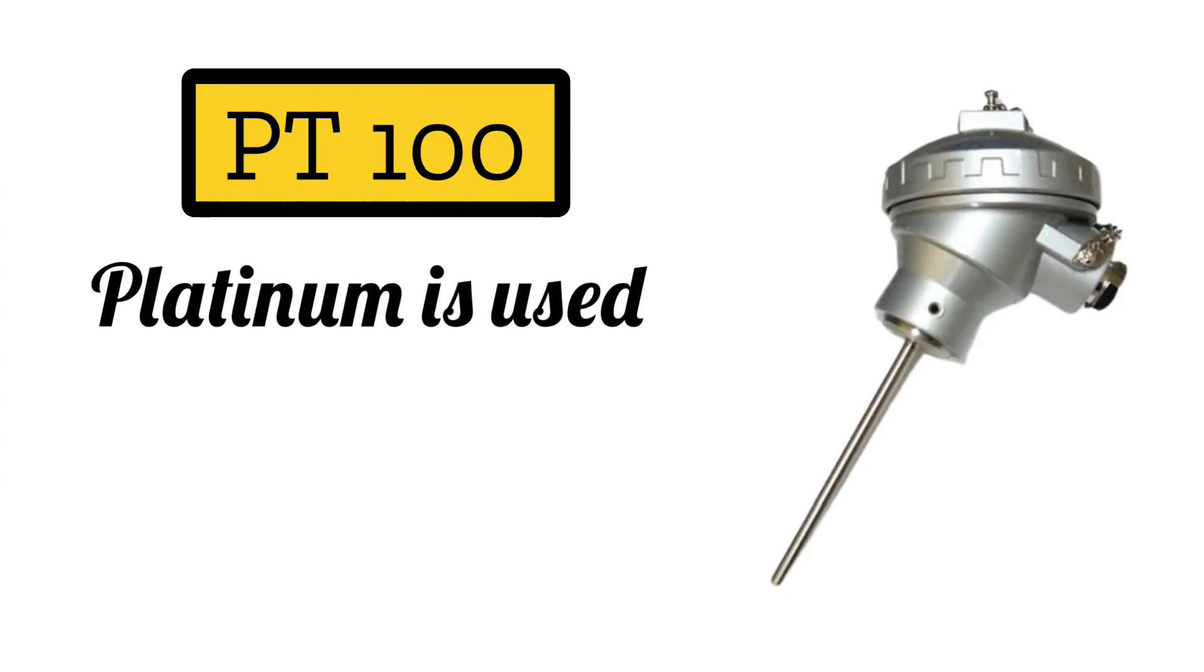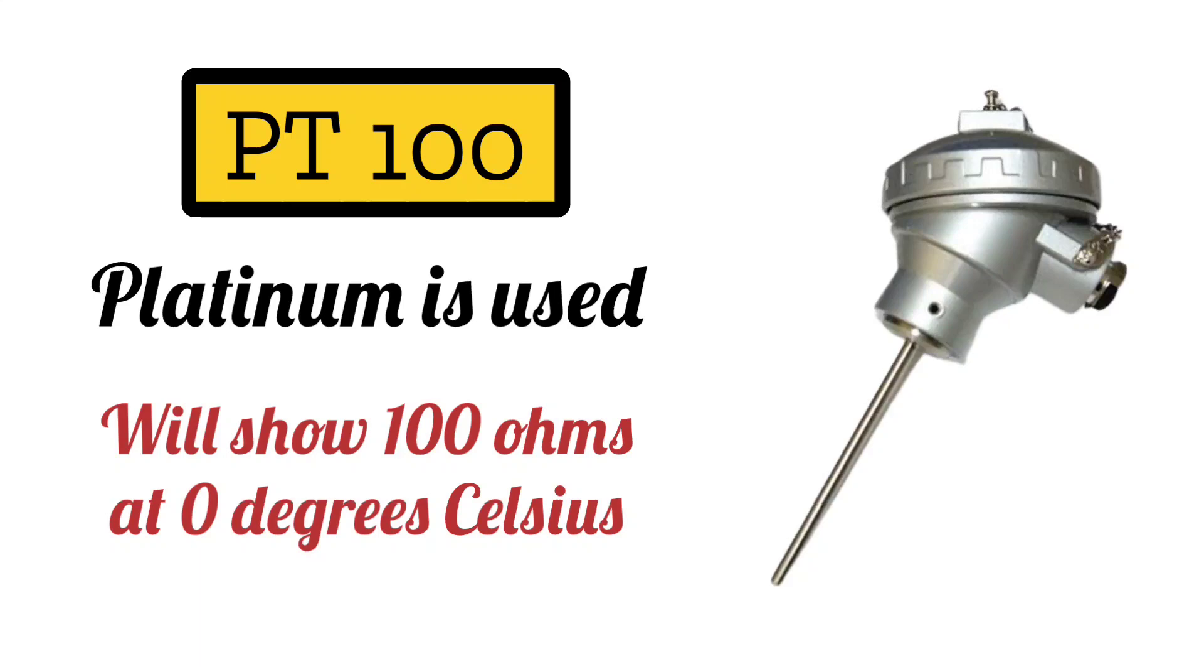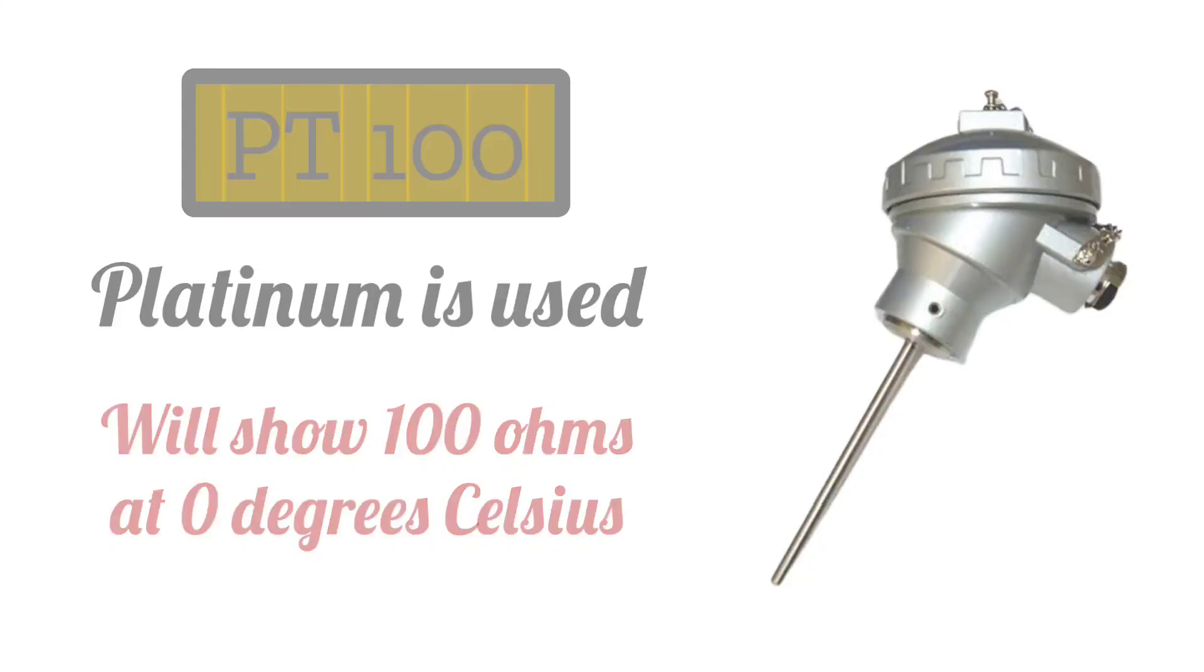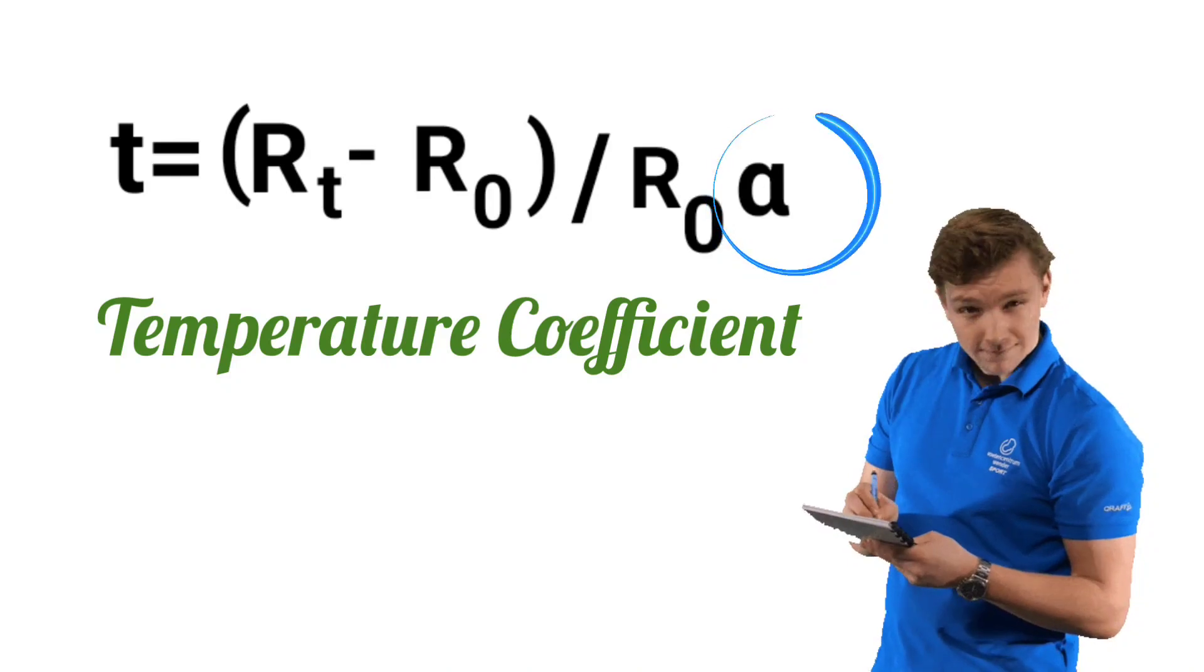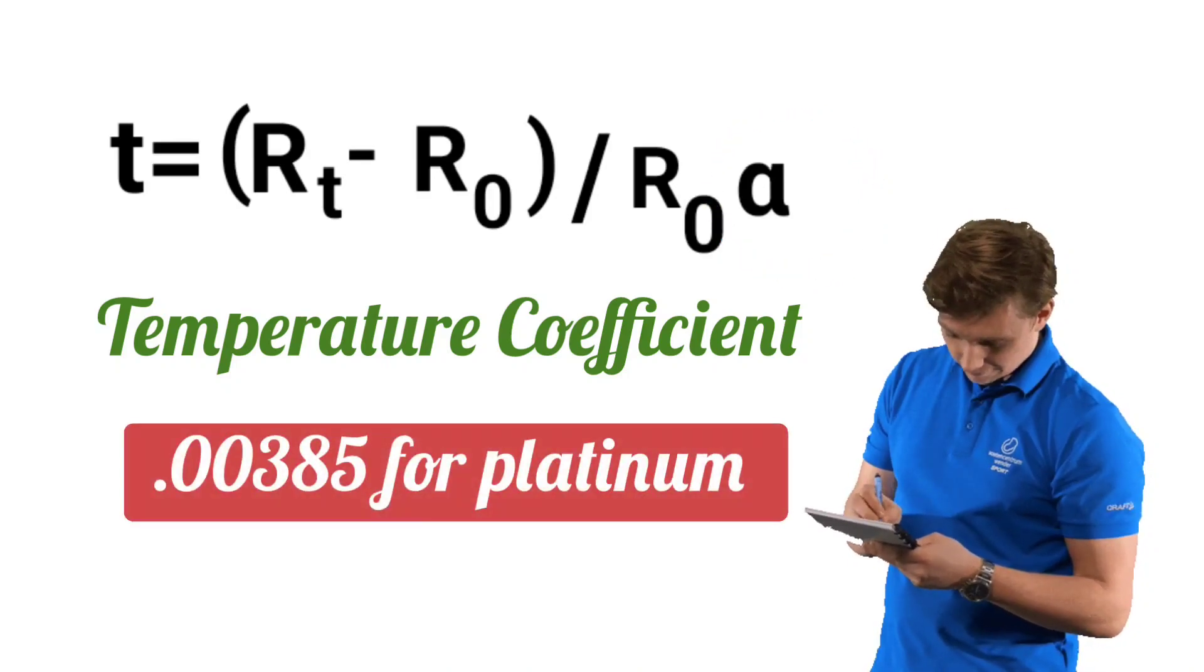PT100 means it's platinum RTD, and it will show 100 ohms at 0 degrees Celsius. Here alpha is the temperature coefficient, whose value is 0.00385 for platinum.